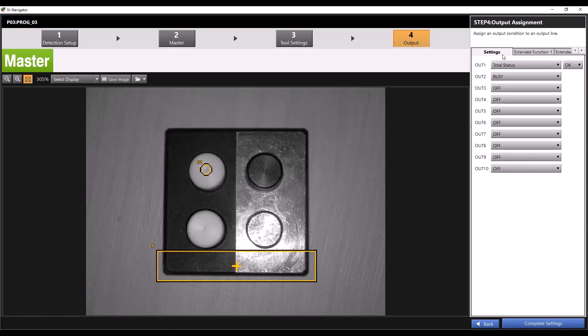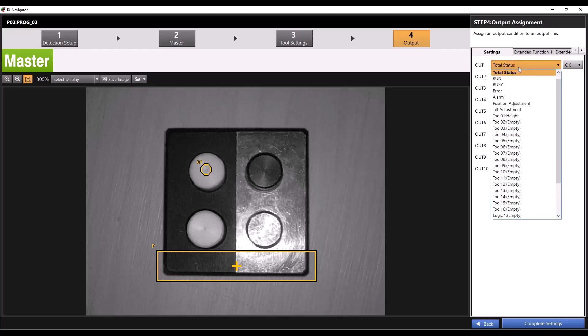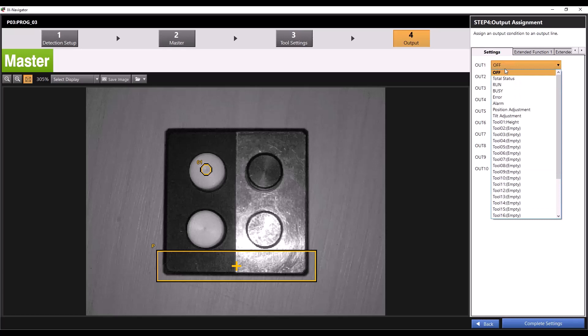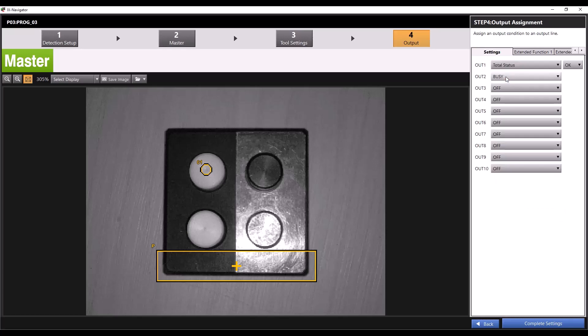In step 4, you'll see you have the option to assign up to 10 total outputs, which would require using every output wire available on the ribbon cable. You'll also see that by default output 1 is set for total status OK, and output 2 is set for busy. If you click the first output dropdown, you can change the condition that will cause that output to turn on. You'll see you have several options for your output conditions. Selecting off will prevent the output from ever turning on.